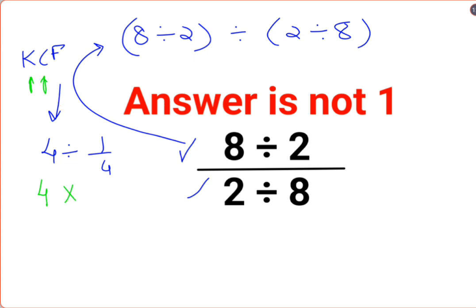C stands for changing the division sign to multiplication and F stands for flipping or taking reciprocal of 1 upon 4 which is 4. So answer for this question is supposed to be just 16.